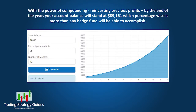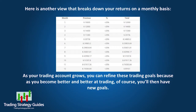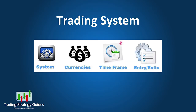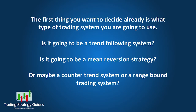With the power of compounding — reinvesting previous profits — by the end of the year your account balance will stand at eighty-nine thousand one hundred and sixty-one dollars, which percentage-wise is more than any hedge fund will be able to accomplish. As your trading account grows, you can refine these trading goals, because as you become better and better at trading, you'll have new goals.